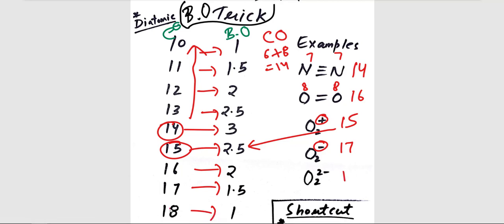And similarly, for 18 total electrons—because we have 2 minus, adding 2 to this value—we have 18 total electrons, and corresponding to 18, we have bond order 1.